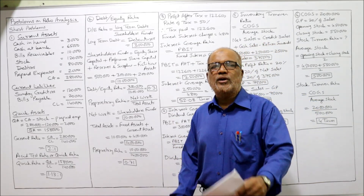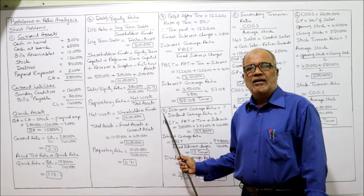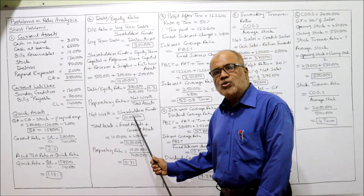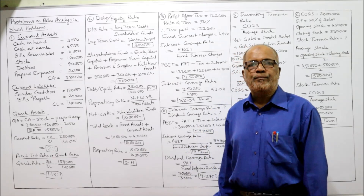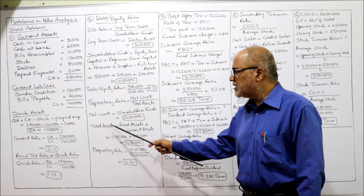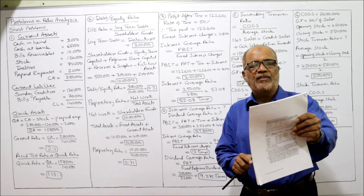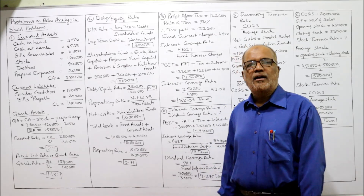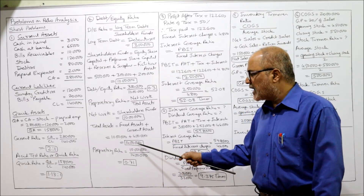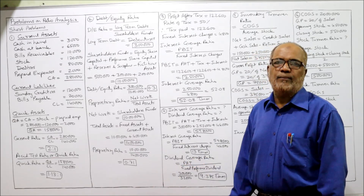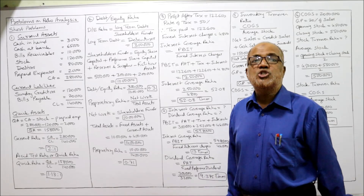Next, proprietary ratio. The formula is net worth divided by total assets. Net worth means shareholders' fund — already calculated as 10 lakh. Total assets equals fixed assets plus current assets: 10 lakh plus 4 lakh equals 14 lakh. Proprietary ratio: 10 lakh divided by 14 lakh equals 0.71. This means 71% of the total assets are financed by shareholders' fund.